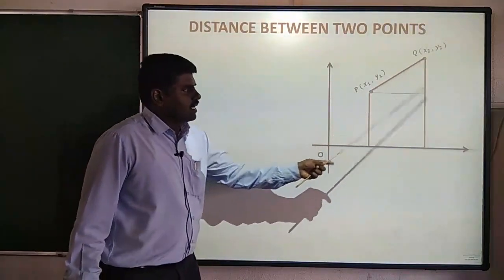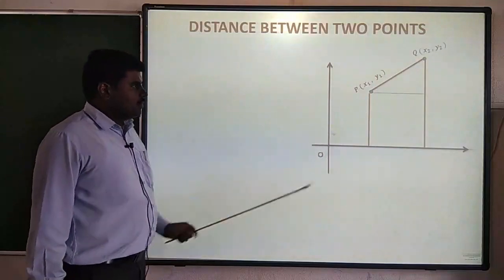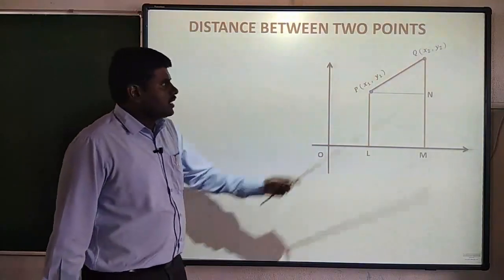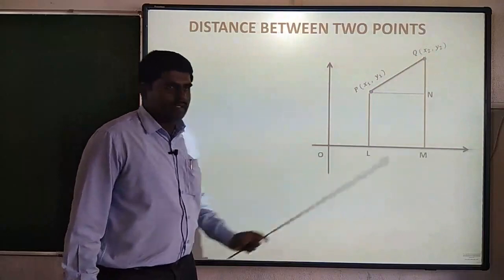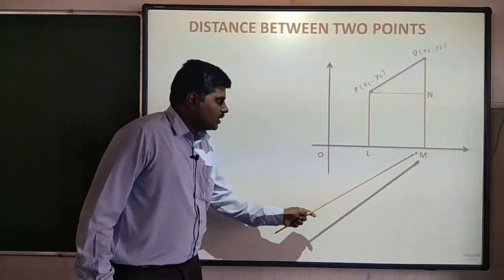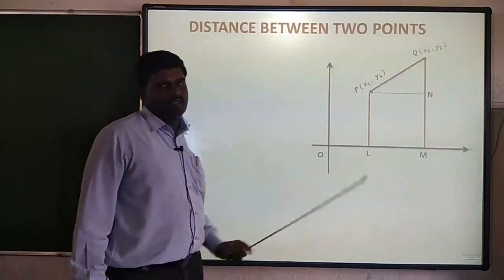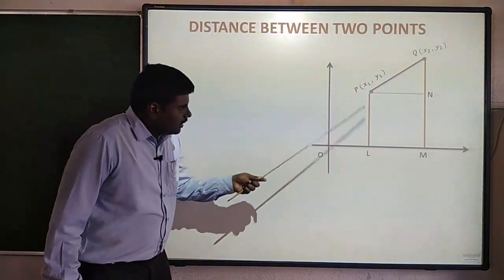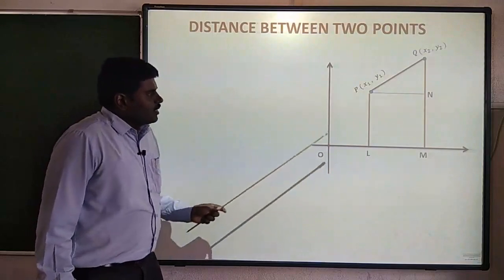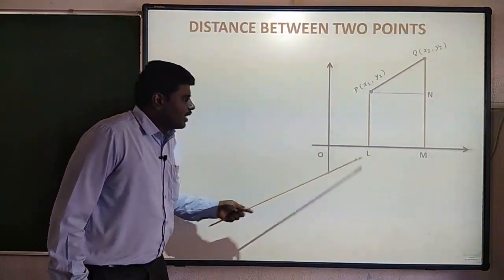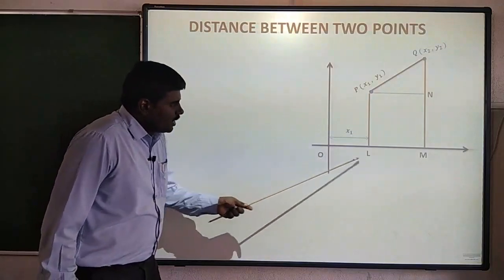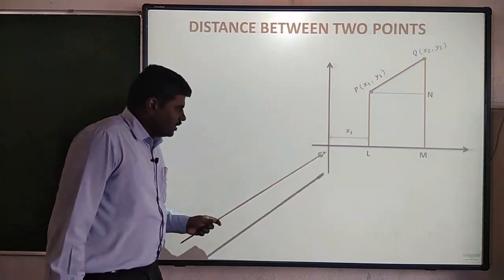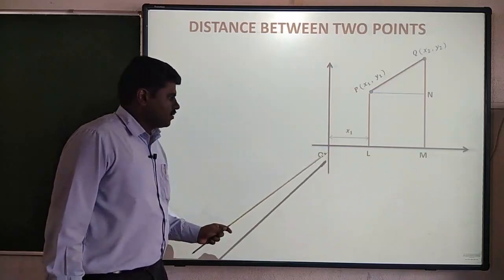Now you will see a small triangle. I will discuss the three points. What is the distance between O and L? The distance between O and L is x1.